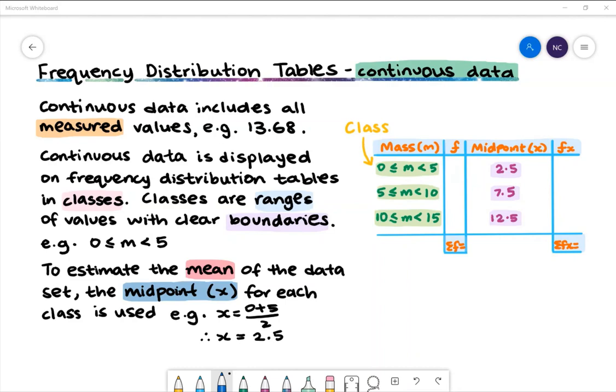To estimate the mean of the dataset, the midpoint, which is denoted by the variable x, for each class is used. In the class which ranges from 0 to 5, the midpoint is the lower limit 0 plus the upper limit 5 divided by 2. The midpoint is 2.5.